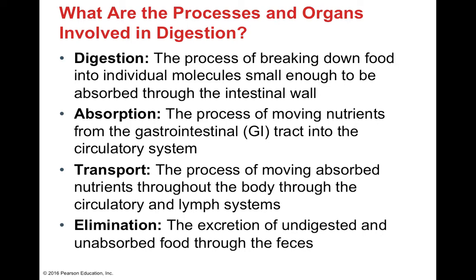Digestion is the process of taking large food molecules and breaking them down into smaller individual molecules, so small that they're able to be absorbed through the intestinal wall and picked up either by the capillary bed or by the lymphatic system in the case of fats. Absorption is how nutrients are moved from the gastrointestinal tract into the circulatory system, how they're transported throughout the circulatory and lymph system, and finally how they are eliminated through excretion.